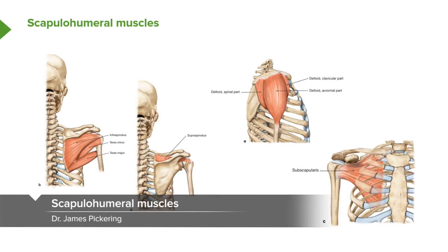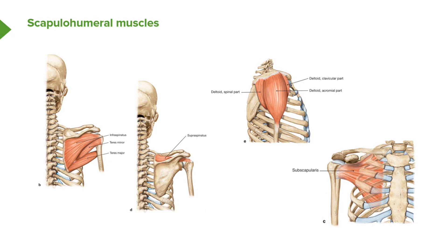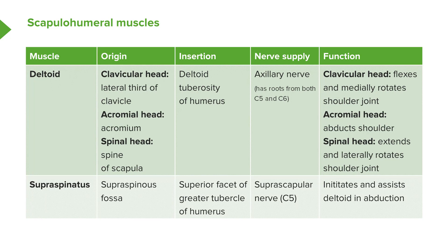Now let's move on to what are known as scapulohumeral muscles. These are muscles running from the scapula towards the humerus. We have a whole series of them: deltoid, supraspinatus, infraspinatus, teres minor, teres major, and subscapularis. We'll go over their various attachments and functions.